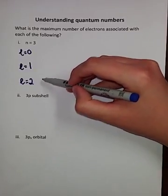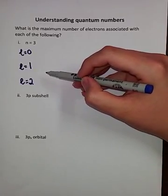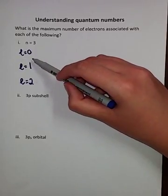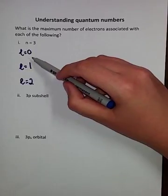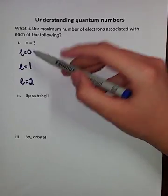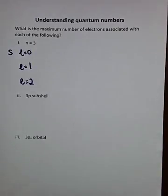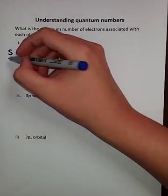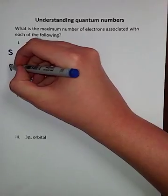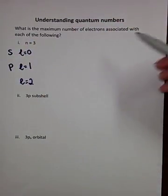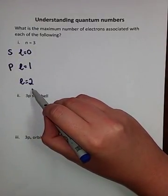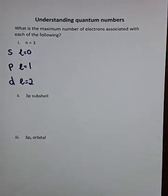The l values talk about the shape of the orbital or the type of subshell. So what type of subshell are we dealing with here? We're dealing with an s-type subshell. It has a spherical shape. Here, it is a p-type subshell. It has a dumbbell shape. And when l equals 2 we are dealing with a d-type subshell.